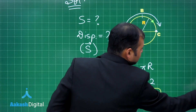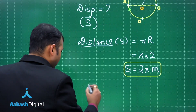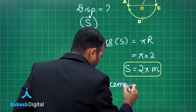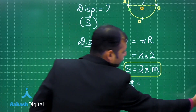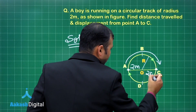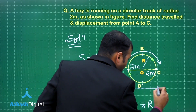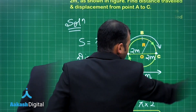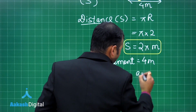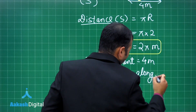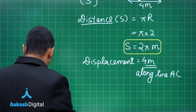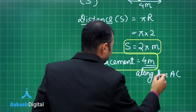Now let's talk about displacement. Displacement is the length of the straight line between two points. From A to C, if the radius is 2 meters on each side, the total straight-line distance is 4 meters. So displacement is simply 4 meters along line AC.